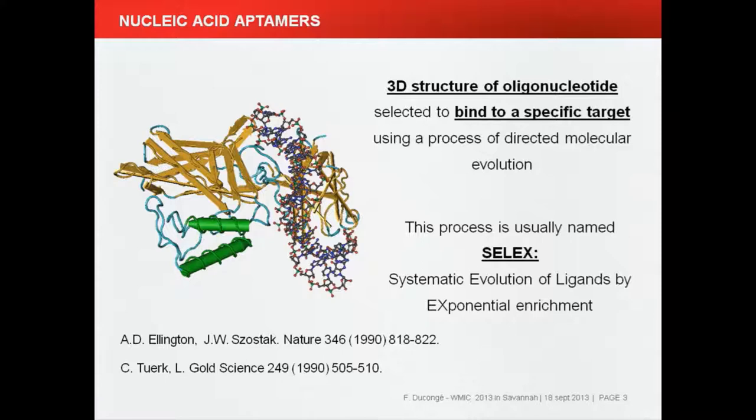What is a nucleic acid aptamer? It's a 3D structure of oligonucleotide that is selected by a process of directed molecular evolution to bind to a specific target. This process is mostly known as SELEX technology — systematic evolution of ligands by exponential enrichment — and this technology appeared in the 1990s.